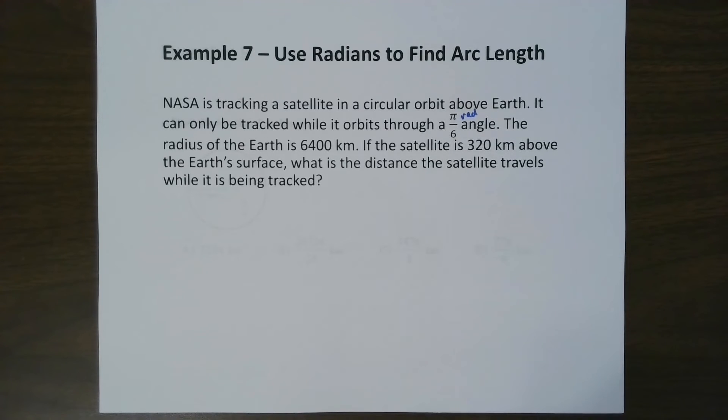The radius of the Earth is 6,400 kilometers. If the satellite is 320 kilometers above Earth's surface, what is the distance the satellite traveled while being tracked?